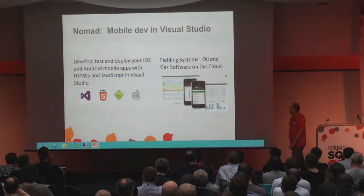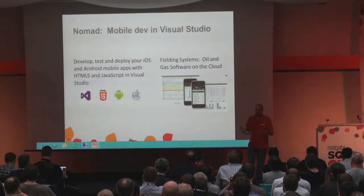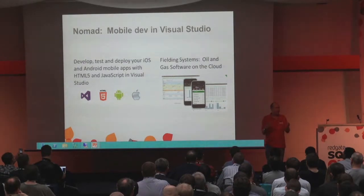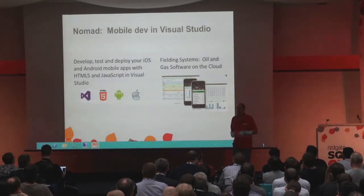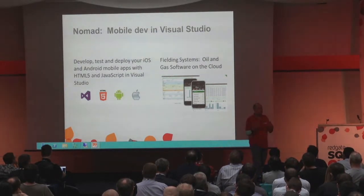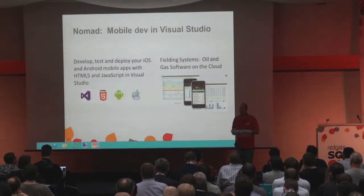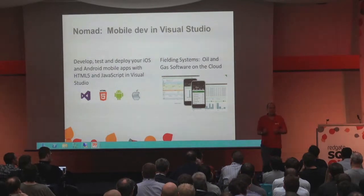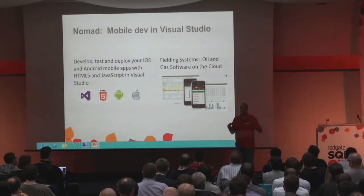And for mobile, we've got a tool called Nomad. Nomad allows you to develop applications for iPhones and Android environments inside of Visual Studio. One of our customers is Fielding Systems, who develop software for oil and gas companies. They want to create an application for their people in the field — on a platform or oil well — to use on their iPhone or Android phone. But they're a Windows shop, used to developing inside Visual Studio. What Nomad allows them to do is develop applications inside Visual Studio using a hybrid application with HTML5 and Microsoft Sync services. They can do the design, prototyping, debugging, and deployment without leaving the Visual Studio environment.